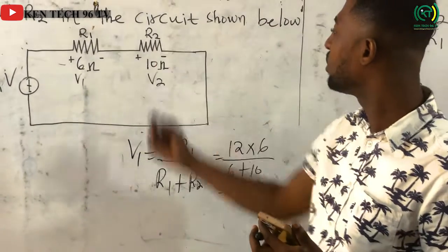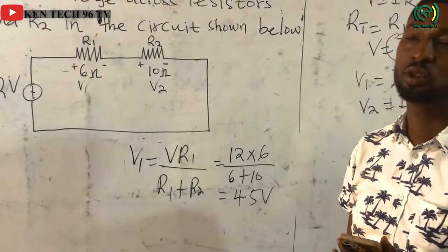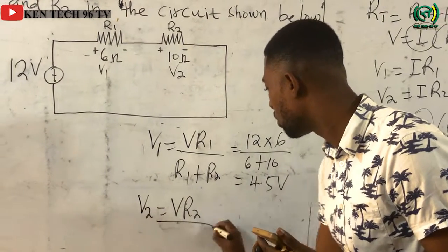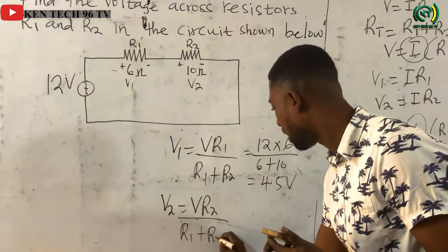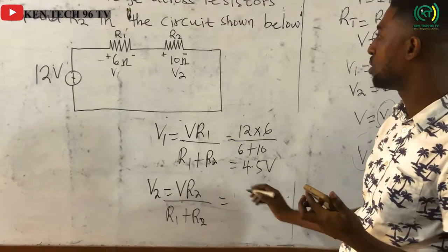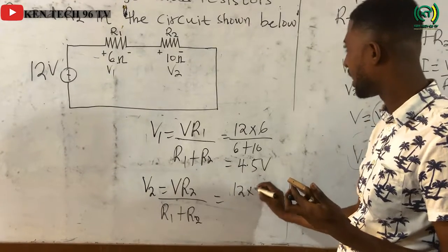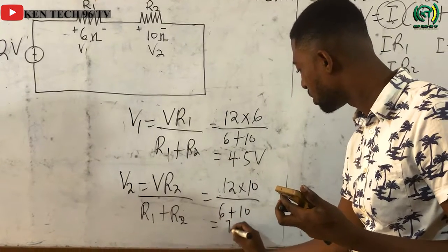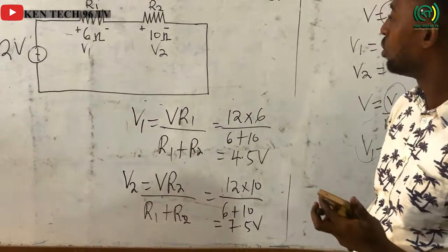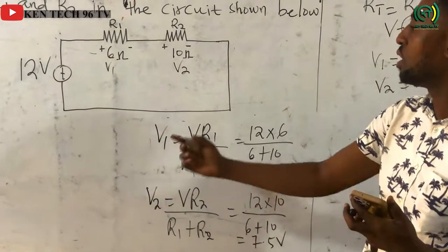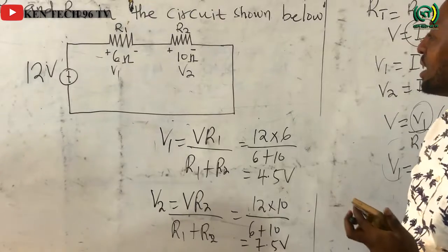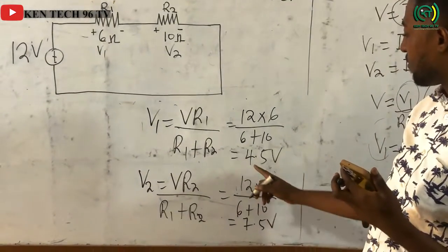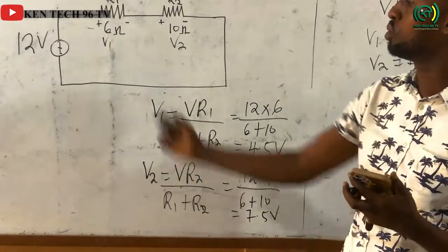Then the voltage drop across resistor R2, which is V2: V2 equals V times R2 divided by R1 plus R2, which is 12 times 10 over 6 plus 10, giving us 7.5 volts. Using the voltage divider rule, we calculated V1 and V2. Since they are connected in series, the sum of V1 and V2 should equal the supply voltage — and indeed, 4.5 plus 7.5 equals 12 volts.